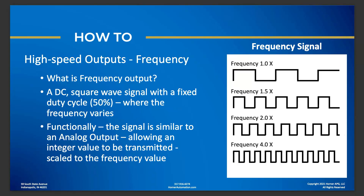Next let's talk about a frequency output. This is very similar, but the difference is you typically fix your duty cycle at 50 percent — the pulse is on for half the time and off for half the time — but you vary your frequency. So instead of frequency being fixed at 1,000 or 10,000 hertz, your frequency might vary from 0 to 1,000 hertz. The receiving device measures the frequency and replicates an integer value, similar to how an analog signal works. Both PWM and frequency can send a value to a secondary device, functioning much like an analog output.